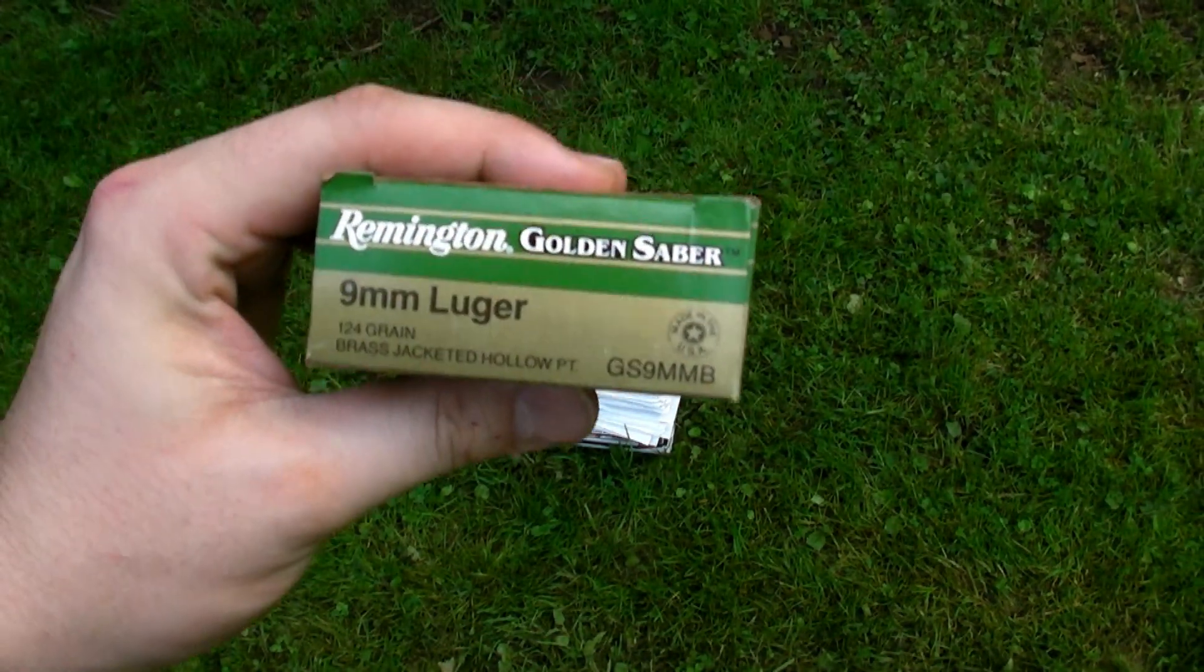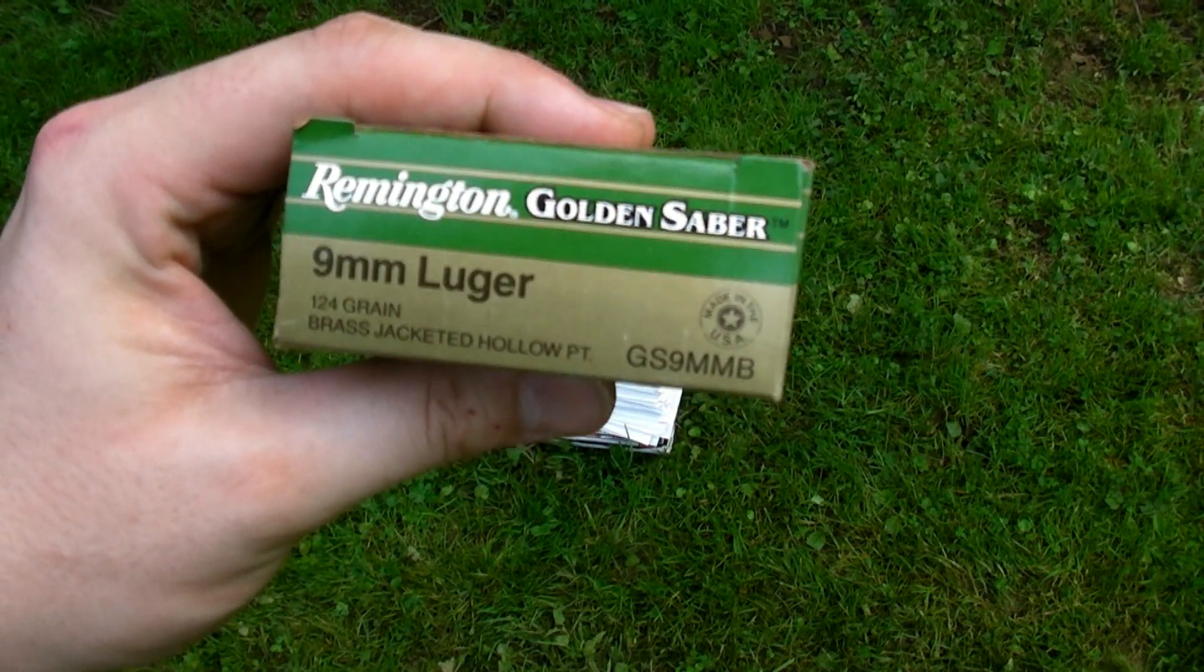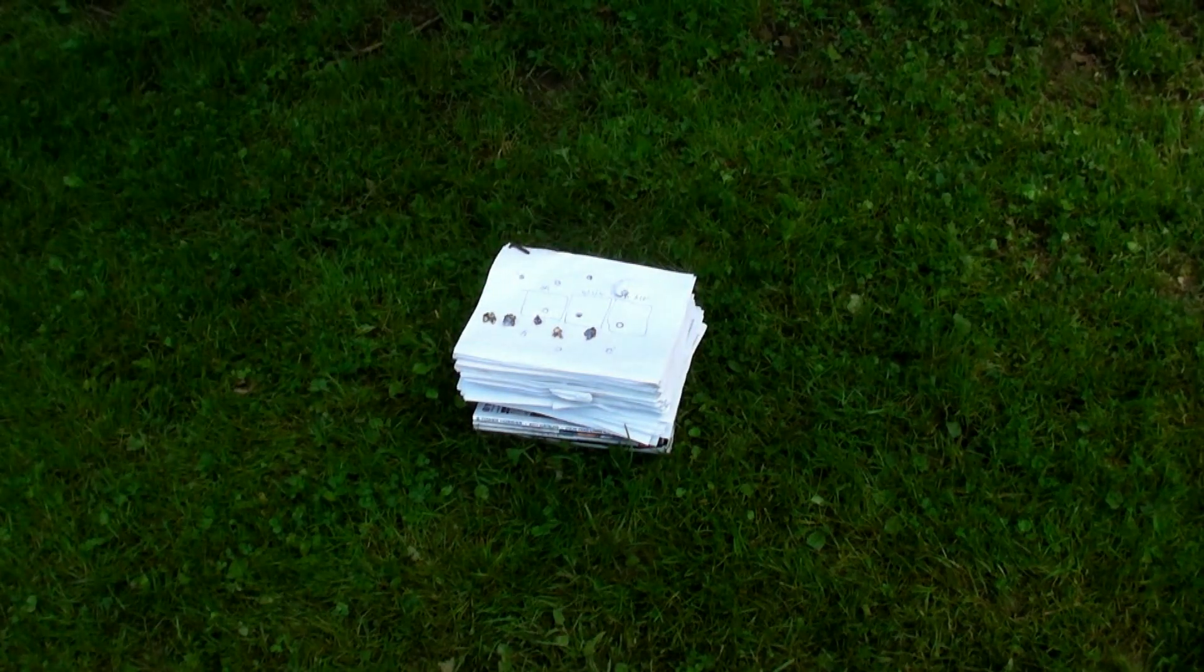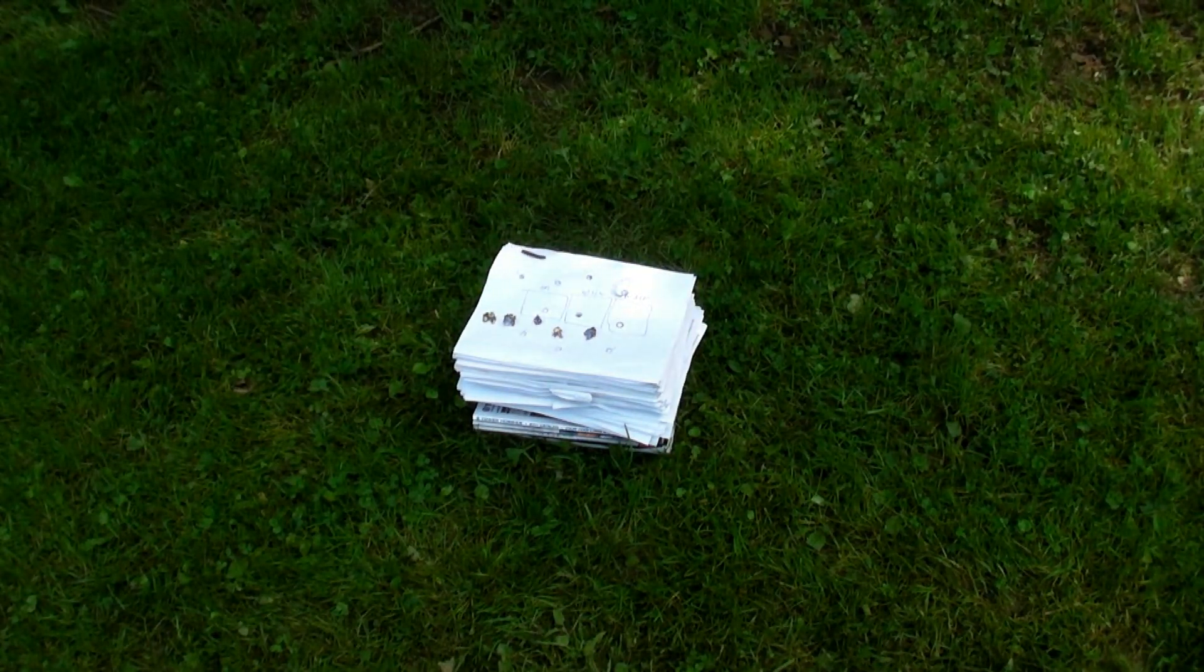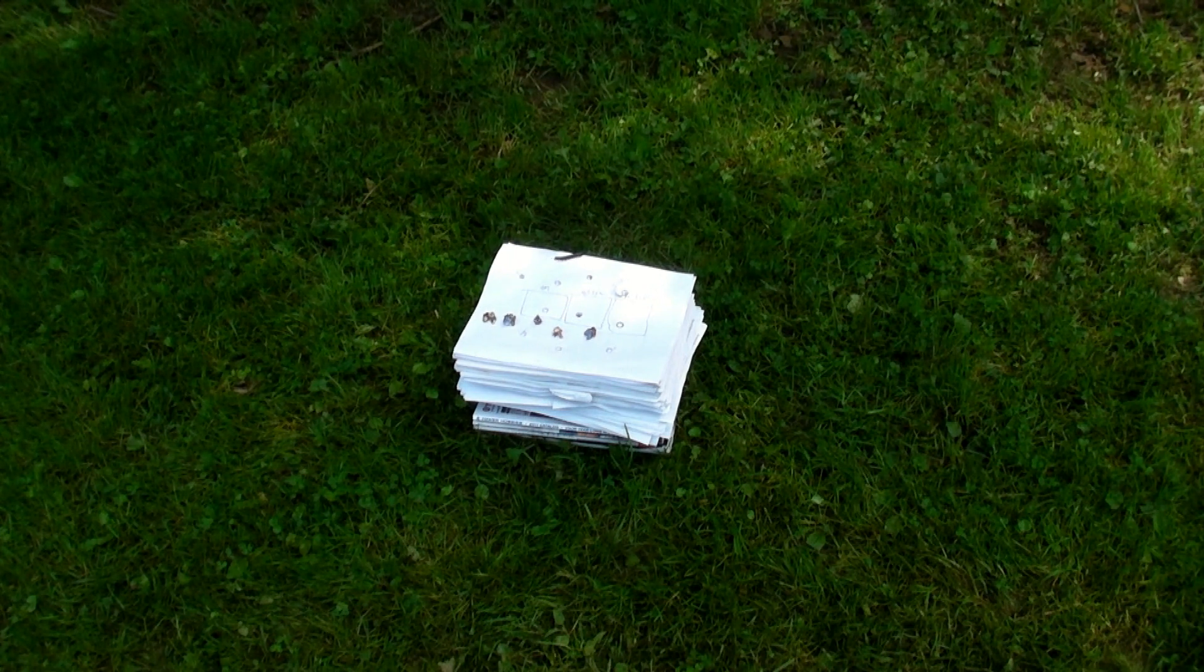Now the first ammo that we shot today was the 9mm. And you can see here I was using Remington Golden Saber. And it was a 124 grain bullet rated at a muzzle velocity of around 1125 feet per second, which would give it muzzle energy around 349 foot-pounds.